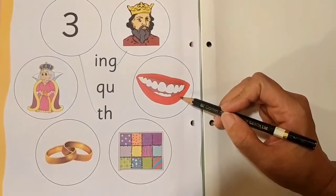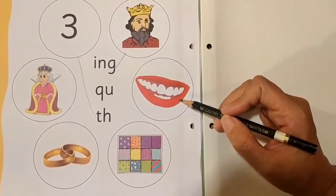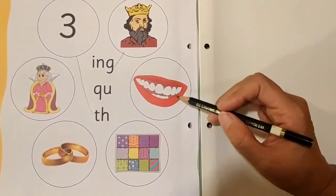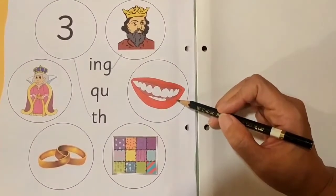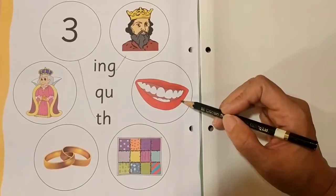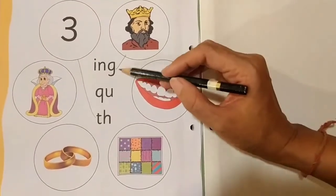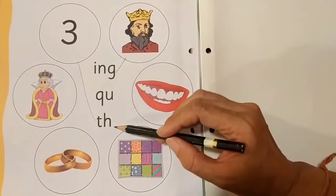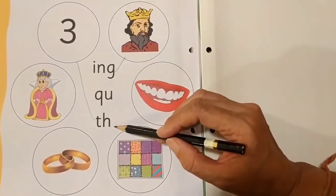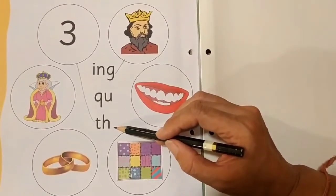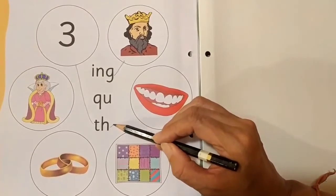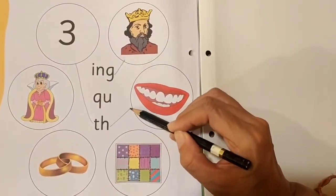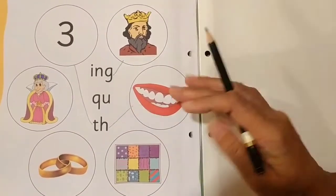The next one — what is this? Teeth. They are teeth. So, which sound is coming — Ing, K, or Th? The right answer is TH. So let's match.